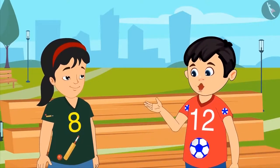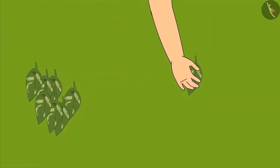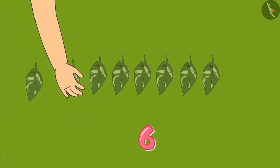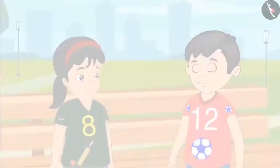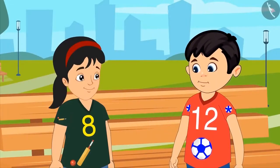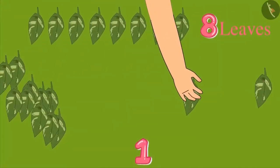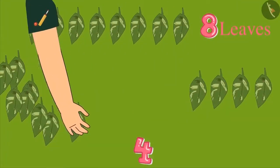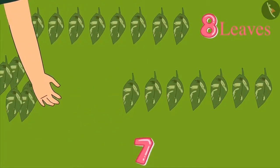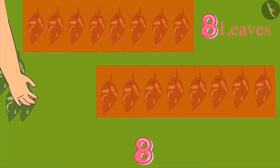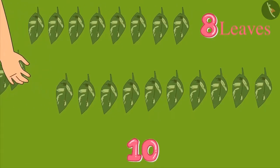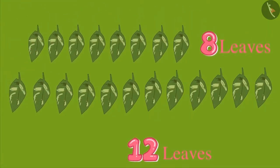You do it first. Okay, 1, 2, 3, 4, 5, 6, 7 and 8. Here are 8 leaves. Come on, now you collect 12 leaves. 1, 2, 3, 4, 5, 6, 7, 8 — that's equal to the number of leaves you collected — but there are 9, 10, 11 and 12 leaves.